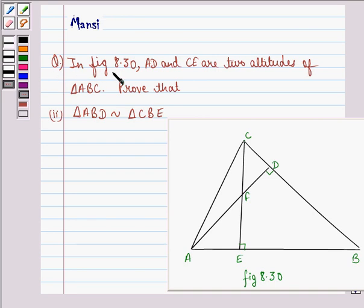The question says, in figure 8.30, that means this figure, AD and CE are two altitudes of triangle ABC. Prove that triangle ABD is similar to triangle CBE.